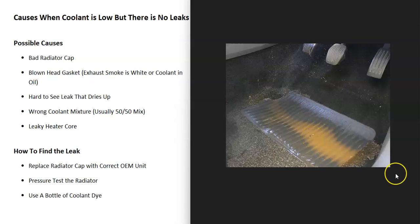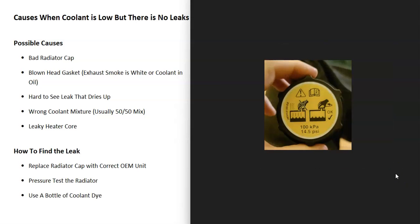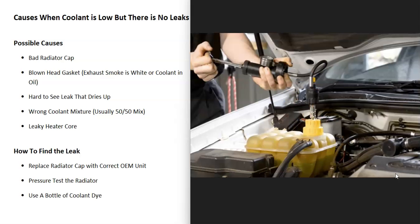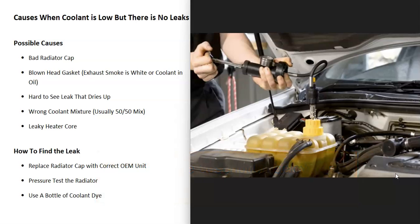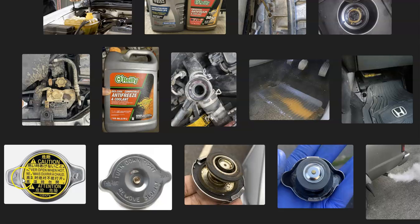To find a leak, first make sure the radiator cap is good and replace it with the correct OEM unit if needed. You can also pressure test the radiator or the entire coolant system — you pressurize the system and if it loses pressure, you know there's an issue. You can also use coolant dye: pour it into the coolant and wherever the leak is, the dye will make it very visible.